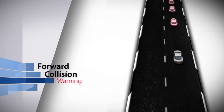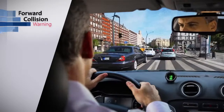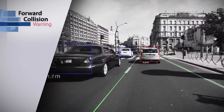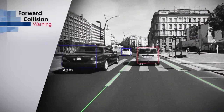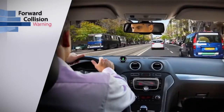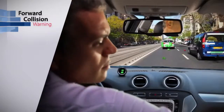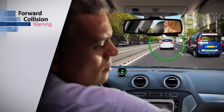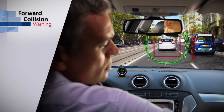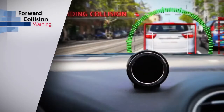First is the forward collision warning. Mobileye monitors your vehicle's speed and the distance between you and the vehicle in front of you. When there's a high risk of a collision, Mobileye delivers audible and visual alerts so you can take action.